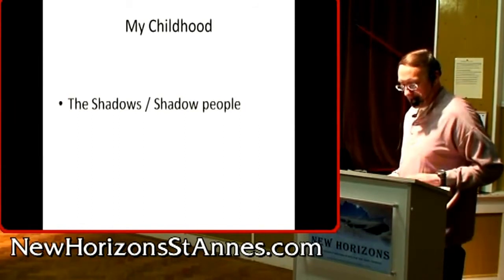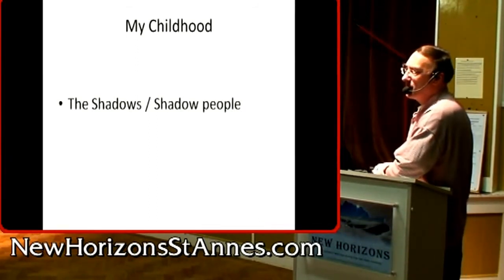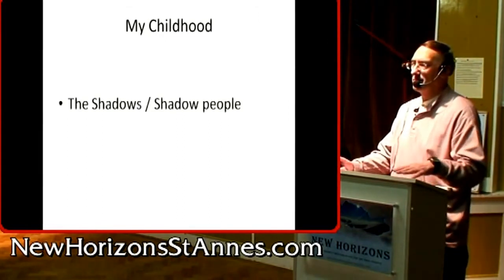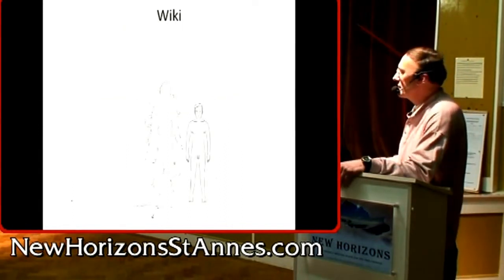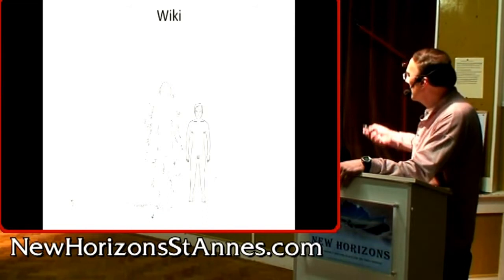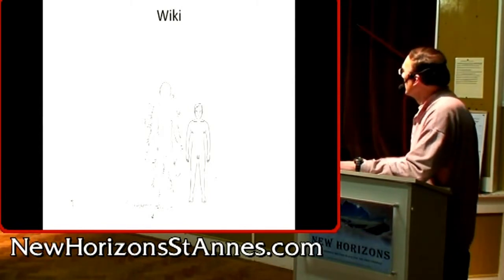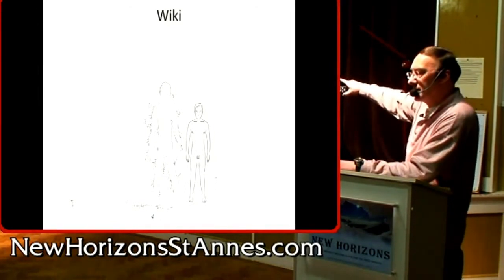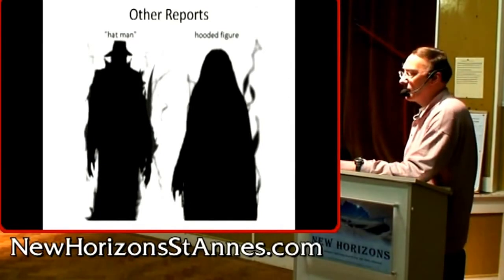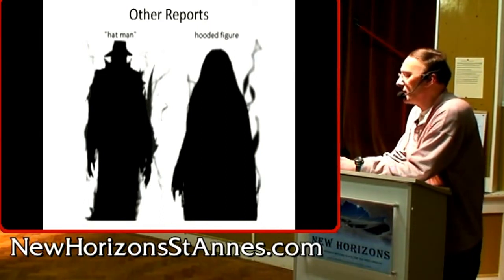The shadow beings — sometimes called the shadow people. On the right is a person's rendition of what they thought they saw; on the left is what we call the hat man, on the right the hooded figure. These are shadow people. I'm going to show you a drawing I did about four years ago — actually from my childhood. When I was five or six years old, I called him the 'smoke man' because he appeared to have smoke coming off him.